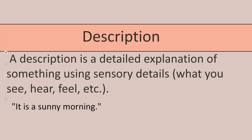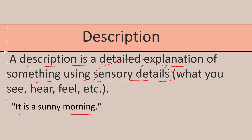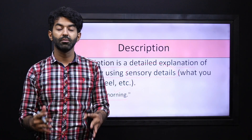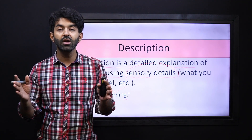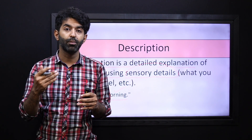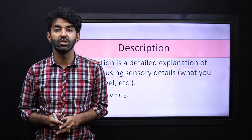Now let us look at description. It is taken from the word describing or describe. A description is a detailed explanation of something using sensory details — all those details related to your five senses: what you see, feel, how something tastes, etc. For example, 'it is a sunny morning.' How is the morning? The morning is sunny — the sun is shining brightly, the sun is at its peak, it is a sunny morning, and there may be quite a bit of heat. So we have all these implied and visible descriptions in our sentences.